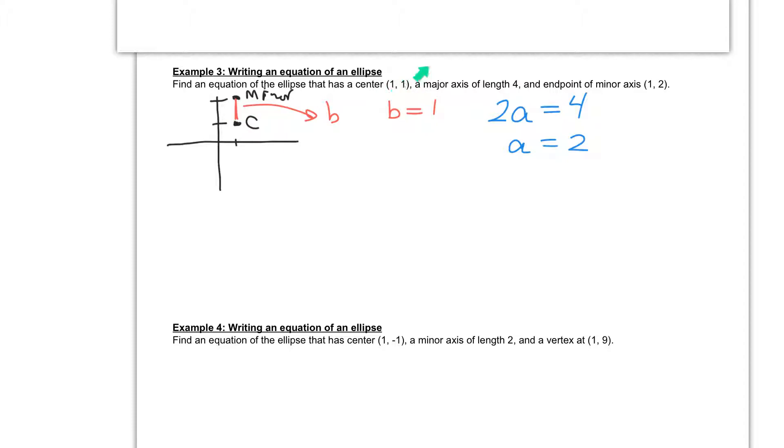And then I know my center is (1,1). So my center gives me my H and my K, H being the first one, K being the second one. So I also know that my H value is 1, and my K value is 1.